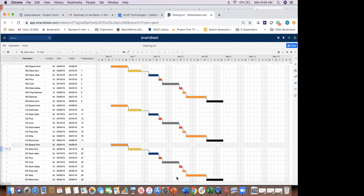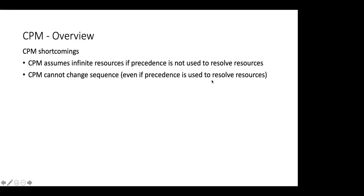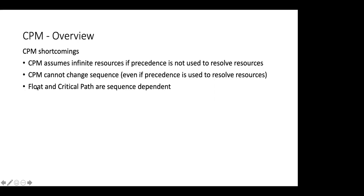You've got a choice: either don't lock yourself in — in which case you're not modeling resources and assuming infinite resources — or you draw those arrows, locking into a static non-dynamic system that cannot do anything useful by itself without you interfering and redrawing, say, 200 arrows out of 6,000 in a typical schedule. Also important: the float and the critical path are sequence-dependent. When you use precedence to resolve resources, you fix a certain sequence, but all your float calculations depend on how you drew those arrows. Any time you want to re-sequence — because it rained or whatever — all your float numbers change.